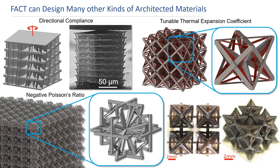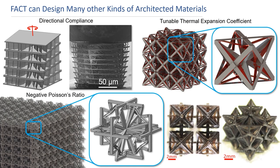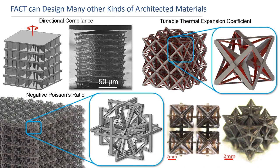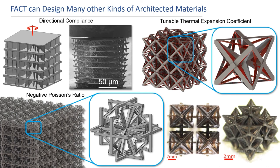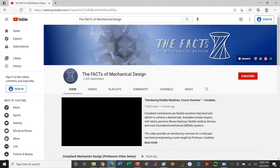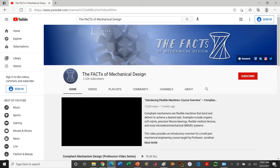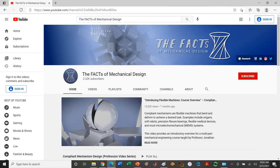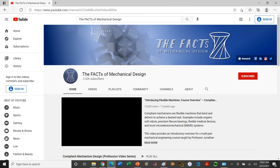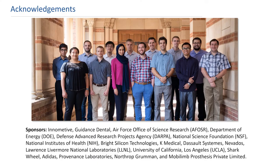Although all the design examples shown have been serially stacked designs consisting of wire flexors exclusively achieving desired directions of compliance, FACT can be used to achieve architected materials that achieve any mechanical property and consist of flexible geometries of any shape configured in any way desired. Examples include transmission-based mechanisms like this negative Poisson's ratio material, and thermally actuated materials like this tunable thermal expansion coefficient design. If you're interested to learn more about FACT, check out my educational YouTube channel called 'The Facts of Mechanical Design,' which consists of professionally edited videos about compliant mechanisms and architected materials. I acknowledge my group's research sponsors and am grateful for my amazing students who make all this happen. Thank you for your attention.